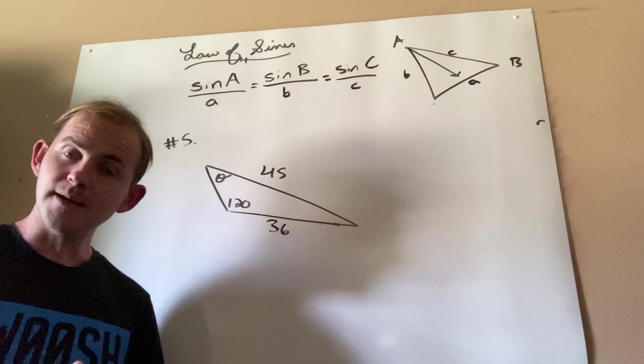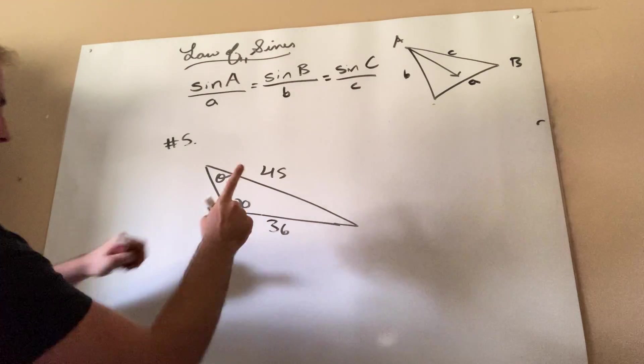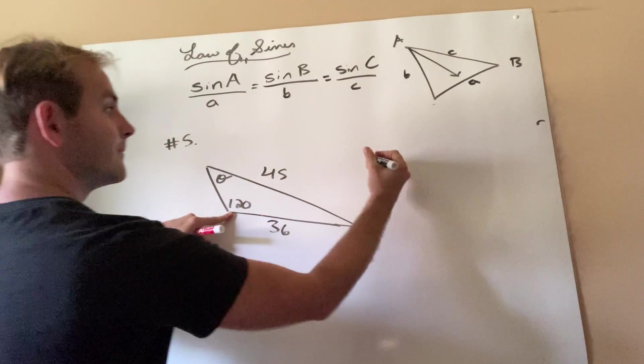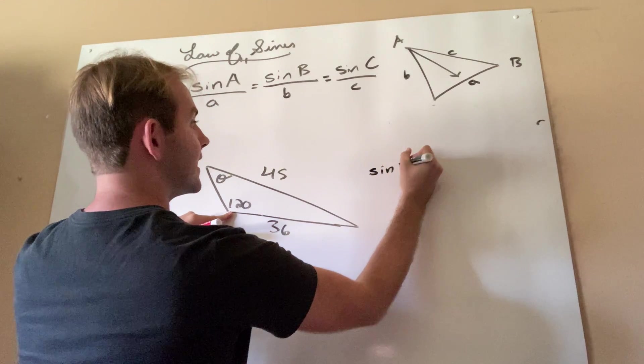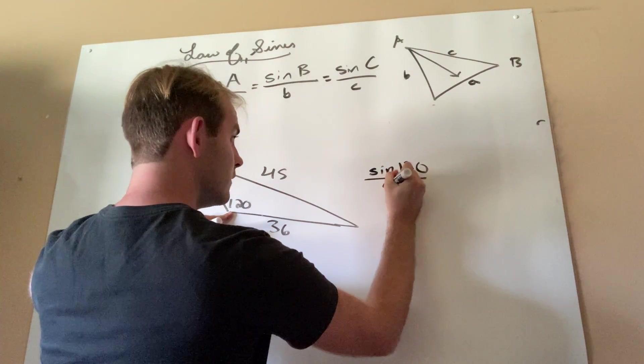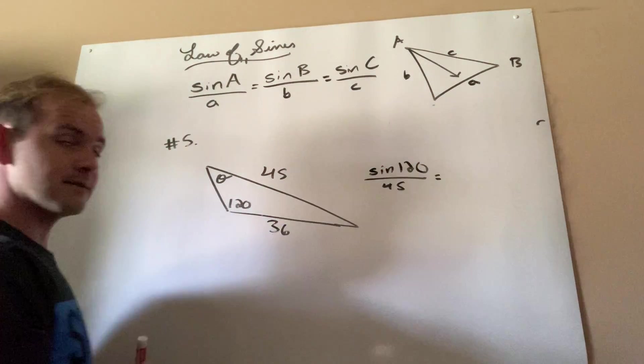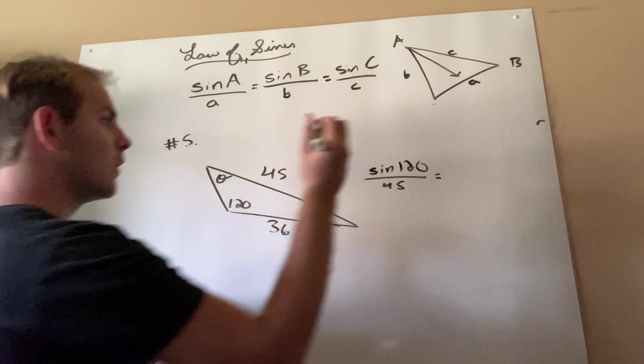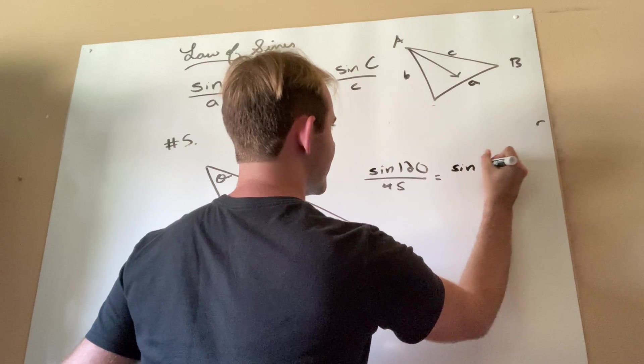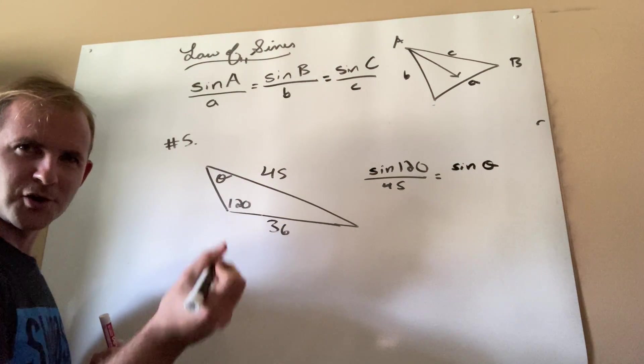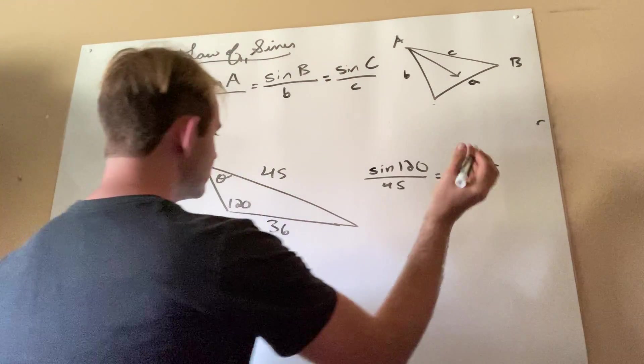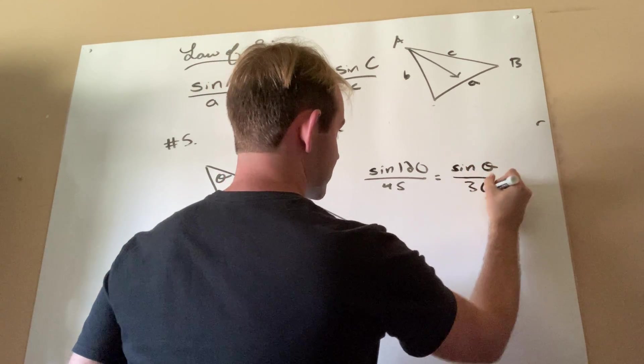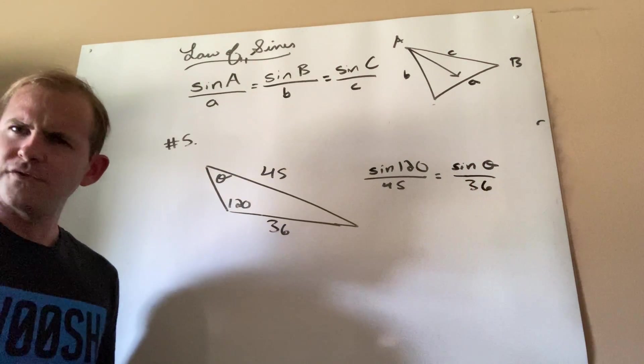First things first, let's set up our proportions. Angle side. So I'm going to say sine 120 over 45. The sine of the angle divided by the side across equals sine theta. I don't really know what that is yet, but hopefully I'll find out later. Over 36.